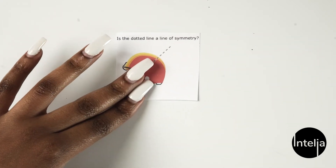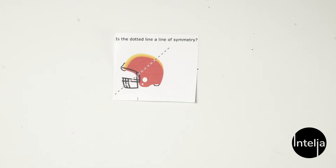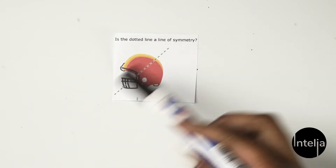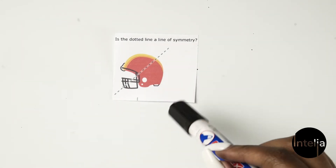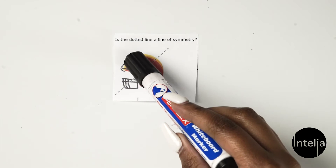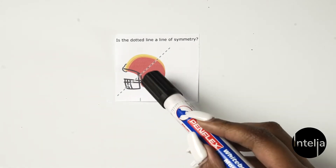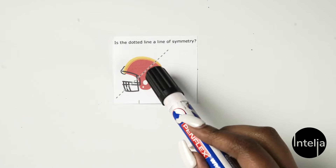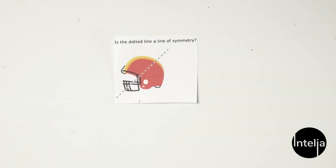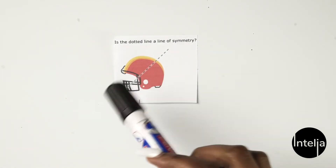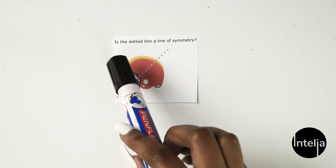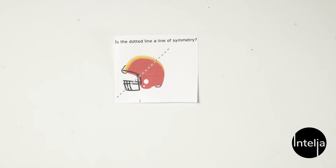Moving on to this one — yes, it does cut the helmet in half, but does this look exactly the same as that? No, it doesn't. So this isn't a line of symmetry. For instance, this white little circle is here but it's not on the top, and the wiring is different from this side and that side. So it's not a line of symmetry.